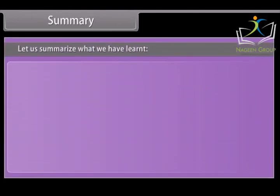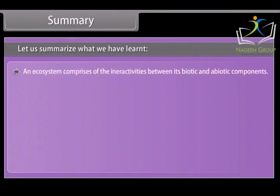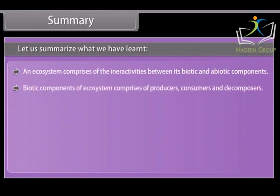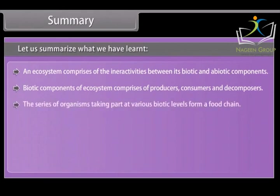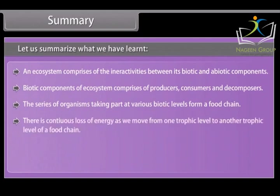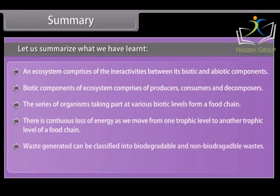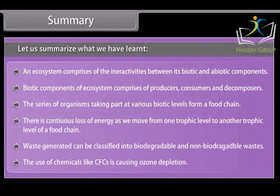Let us summarize what we have learnt. An ecosystem comprises the interactions between its biotic and abiotic components. Biotic components consist of producers, consumers and decomposers. The series of organisms taking part at various biotic levels forms a food chain, with continuous loss of energy as we move from one trophic level to another. Waste generated can be classified into biodegradable and non-biodegradable wastes. The use of chemicals like CFCs is causing ozone depletion. Thank you.